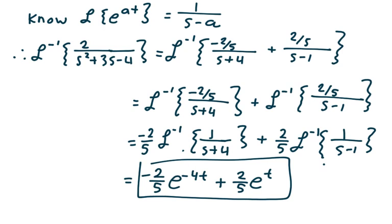We're looking good. We know that the Laplace transform of e to the at is 1 over s minus a — that's a very standard Laplace transform we need to know. So now we're going to work backwards. The inverse Laplace transform of 2 over s squared plus 3s minus 4 is the inverse Laplace transform of negative 2 fifths over (s plus 4) plus 2 fifths over (s minus 1), which splits into two separate inverse transforms. Pulling the constants out, we get negative 2 fifths times the inverse Laplace transform of 1 over (s plus 4) plus 2 fifths times the inverse Laplace transform of 1 over (s minus 1).